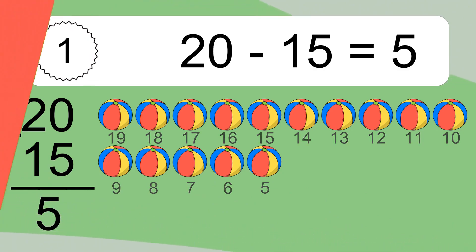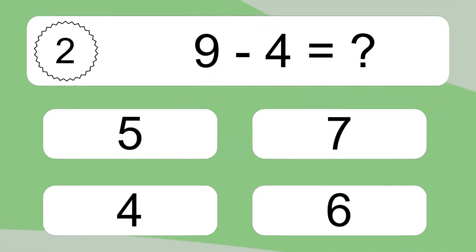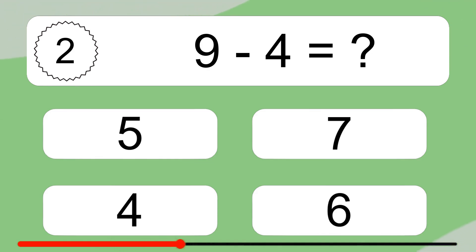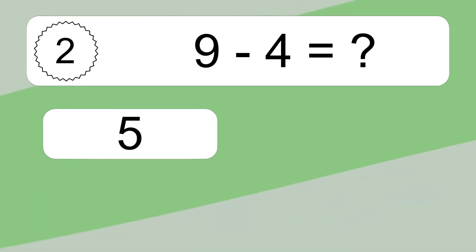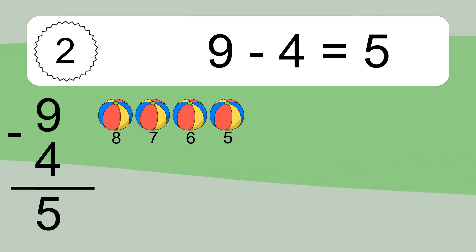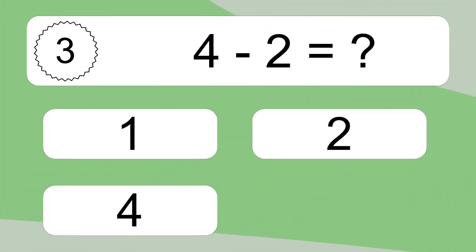9 minus 4 equals what? 9 minus 4 equals 5. Let's count it: 8, 7, 6, 5.